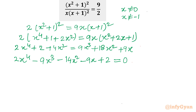Now we can think about this as a reciprocal equation. Notice the coefficients 2, -9, -14, -9, 2 are symmetric about the middle term. Since x cannot equal 0, we can divide the entire equation by x².